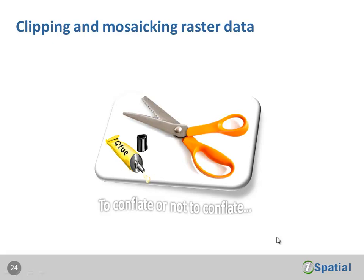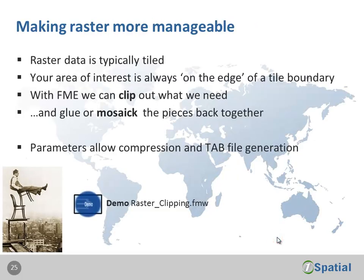Now let's look at raster processing with FME, focusing on clipping and mosaicing. FME can work with raster data just as well as vector. Typically raster data is tiled, but your area of interest can often span the edge of one or more tiles. With FME, we can clip out just the data we need and glue the smaller pieces back together by mosaicing. There are also destination format parameters for setting compression and creating new georeferencing files — for MapInfo users, creating a new tab file is very helpful.